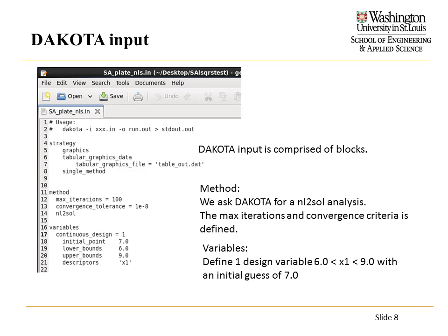What does the DAKOTA input file look like? It's not too complicated. They break down the input into different blocks, and each block is responsible for a different portion of the initialization. In the method block, we're limiting the number of iterations to 100, setting convergence criteria to 1e-8, and the type of solution is a least-squares solution.